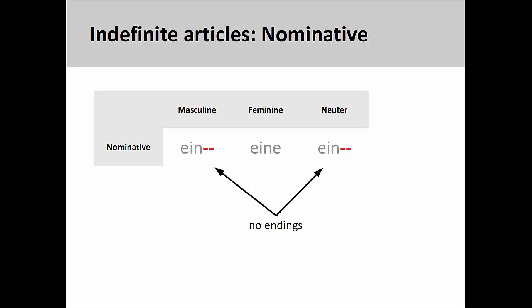The masculine and neuter indefinite articles, unlike the definite articles, do not take an ending. This sometimes makes it difficult to determine the gender of the noun they modify.